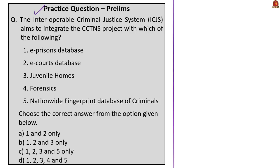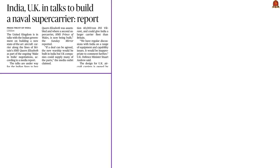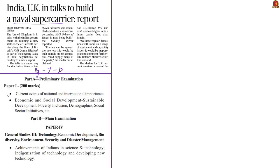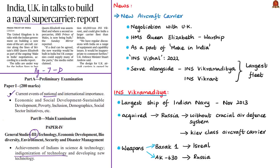Moving on to the last article for the day, which is about the new aircraft carrier of India. This article has appeared on page 7 of the Delhi edition only. The information is relevant in prelims under current events of national importance and in mains under GS Paper 3 in the area of indigenization of technology. The news article states that the Indian government is in negotiation with the United Kingdom on building a new aircraft carrier along the lines of Britain's HMS Queen Elizabeth, which is a British warship.